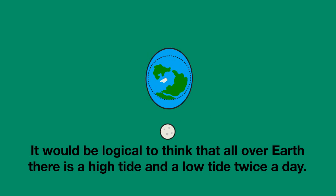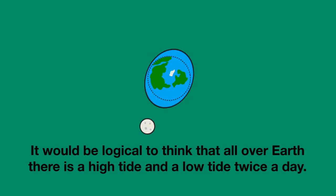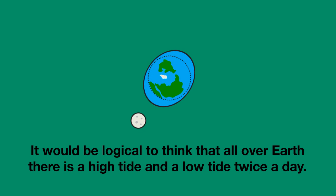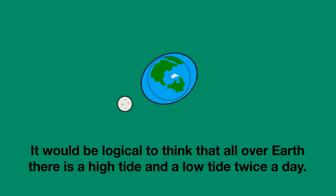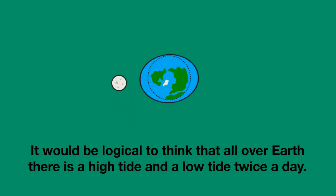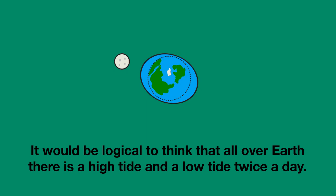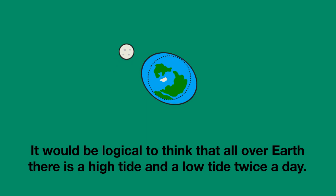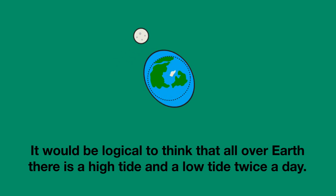Earth takes 24 hours to rotate, so it would be logical to think that all over Earth there's a high tide and a low tide every 12 hours — so twice a day. But this is not the case.